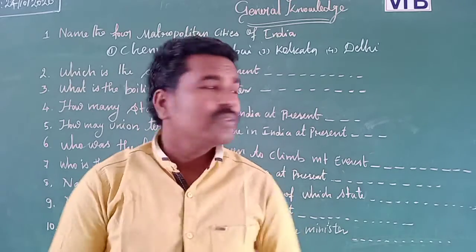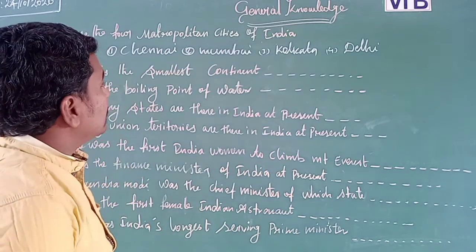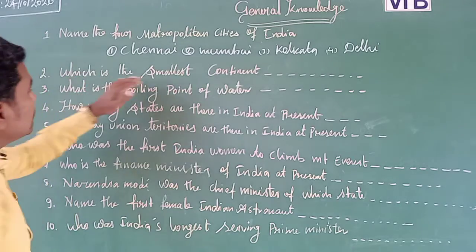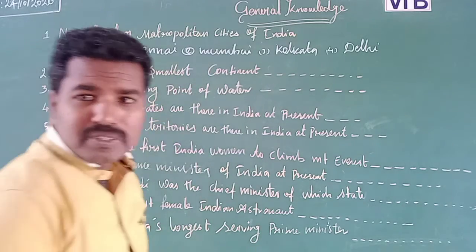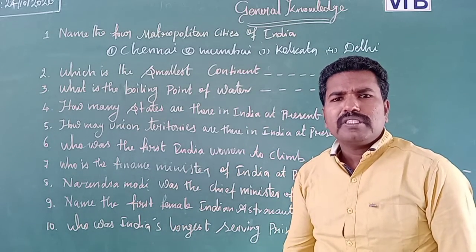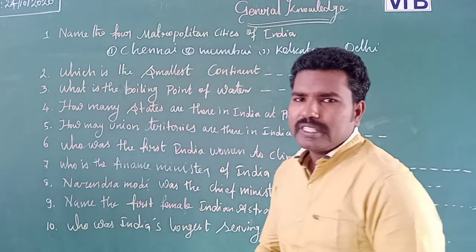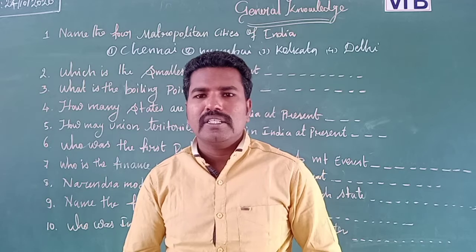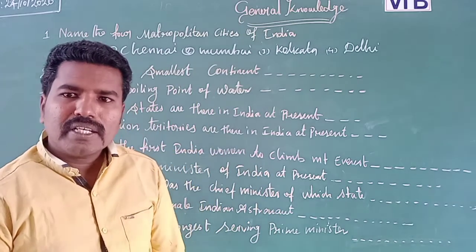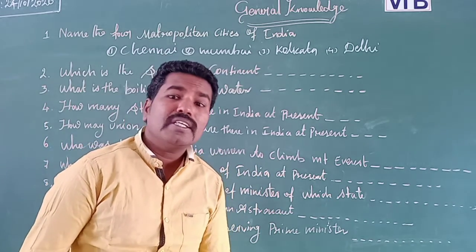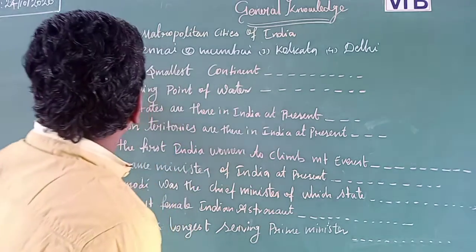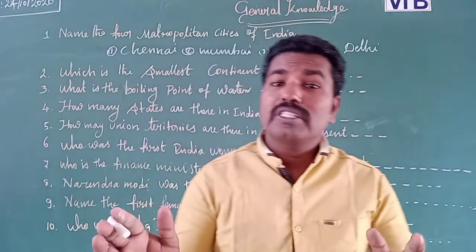The second question: which is the smallest continent in the world? We know that the world has seven continents. The largest is Asia, second Africa, third North America, fourth South America, fifth Europe, sixth Antarctica, and the seventh largest continent is Australia.